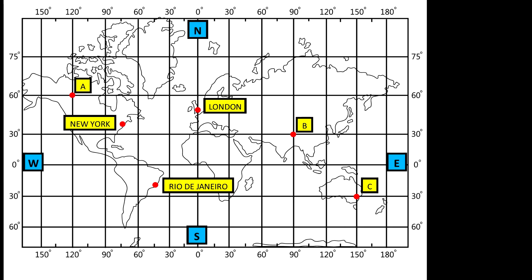If we take a look at London as an example: London is north of the equator but it is directly on the line of the prime meridian. London is located around 50 degrees north and zero degrees.